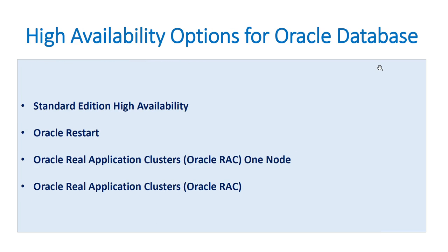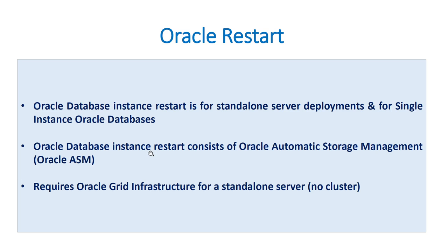The Oracle database high availability options in the clustering context can be SEHA (Standard Edition High Availability Feature), Oracle Restart, Oracle RAC One Node, and Oracle RAC. We will go through all of these options one by one.